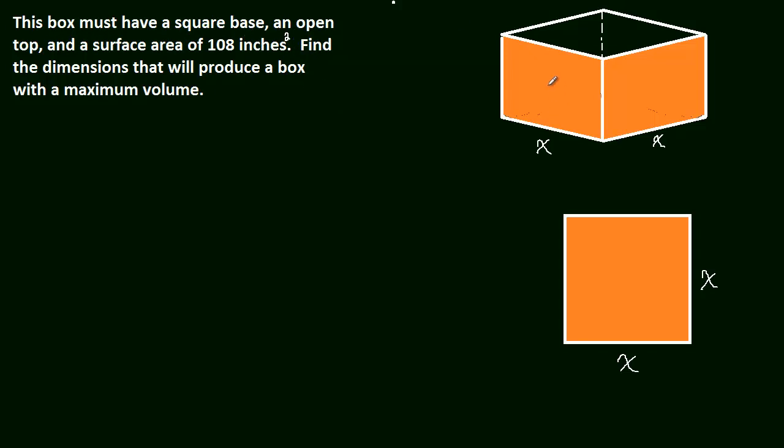So that means that this side has some area, this side has some area, this other side has some area, and of course the base has some area. The total surface area of the box cannot be more than 108 inches squared. So that's really a limitation on the materials we have. We can't make this box infinitely large because we have a certain limitation there.